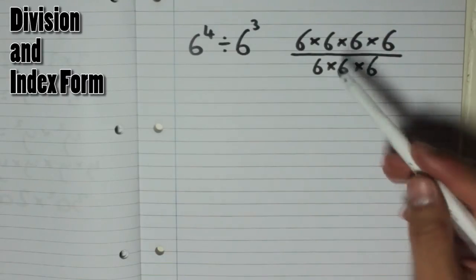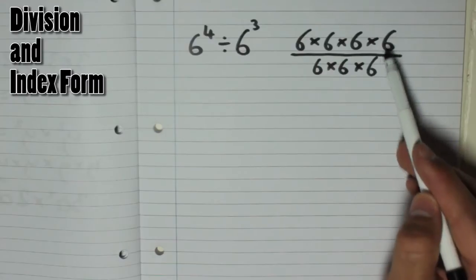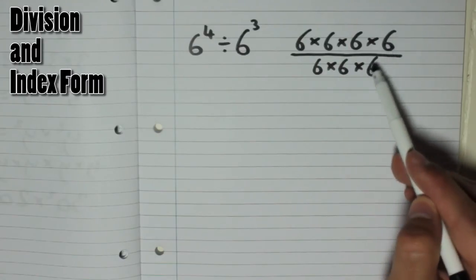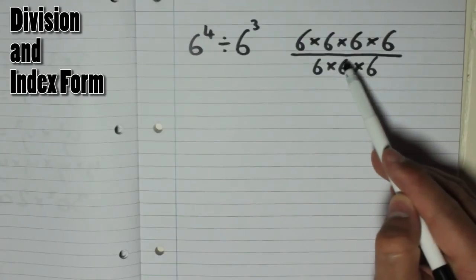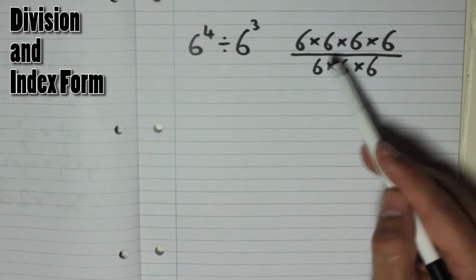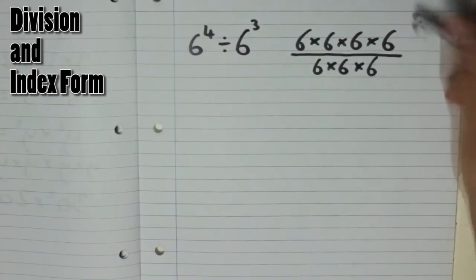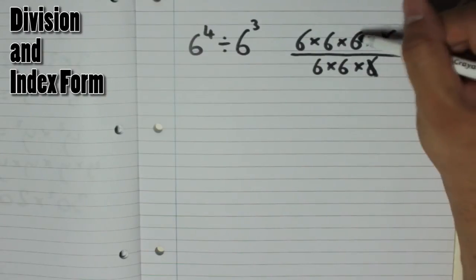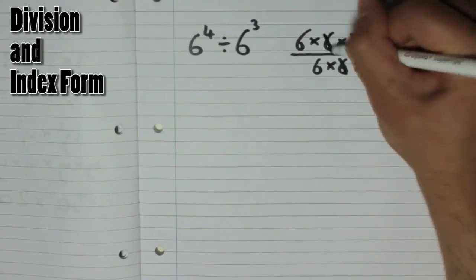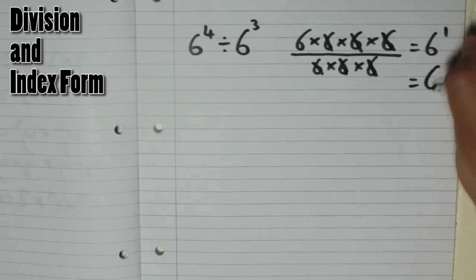So in essence, we have 6 times 6 times 6 times 6, which is 6 to the power of 4, divided by 6 which undoes 1, taking us down to 6 to the power of 3, dividing by another 6 which would undo another one, taking us down to 6 to the power of 2, and then divide by another 6, which undoes a third one, taking us down to 6 to the power of 1. Because that and that will cancel each other out, that and that cancel each other out, and that and that cancel each other out. So you end up with just the 6 on its own, giving us 6 to the power of 1. And anything to the power of 1 is just the number itself, so it's just 6.